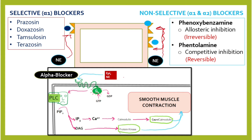Combining calcium with myosin light chain kinase induces smooth muscle contraction. If we block this receptor with an alpha blocker, this whole cascade of reactions is inhibited, resulting in reduced smooth muscle contraction. This reaction normally causes vasoconstriction, but if we inhibit it, it causes vasodilation, which reduces blood pressure.